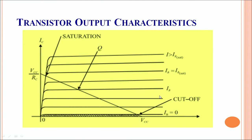For different values of IB, there are different saturation curves. We draw a load line, that is VCE divided by R, and this load line defines the region in which the transistor works as a switch. Before this, the transistor is active, and beyond this, the transistor is in the inactive region or switches off. Plotting this load line gives us the cutoff region, which is utilized in the transistor as a switch.